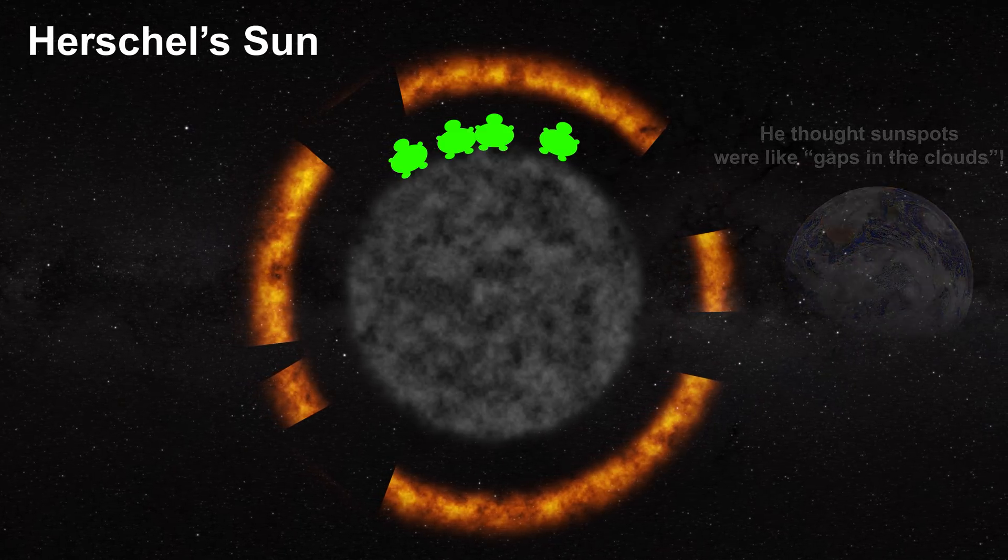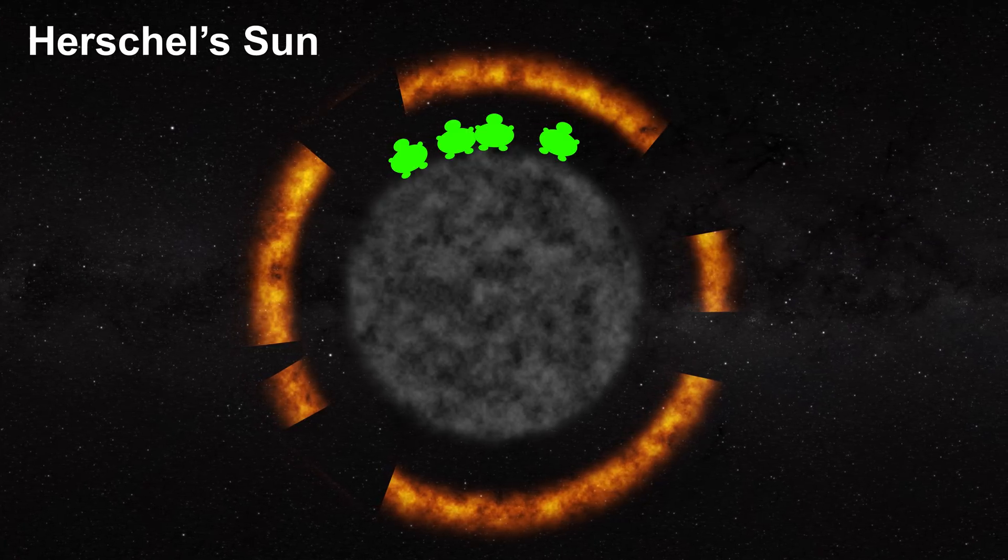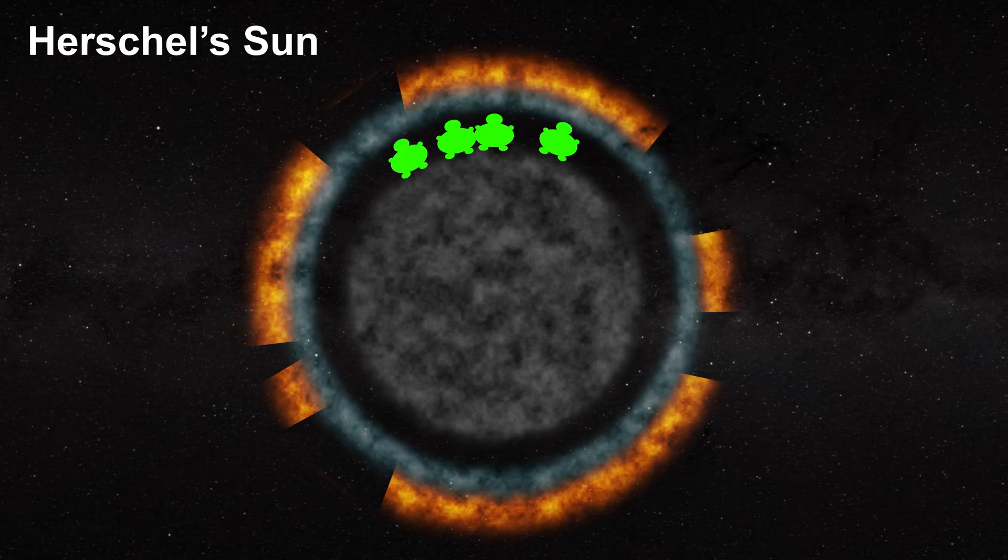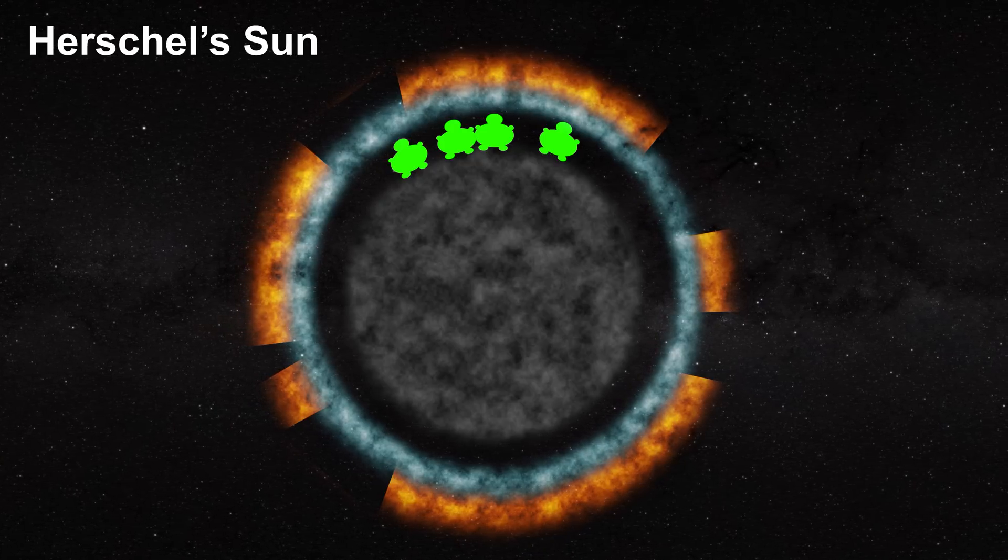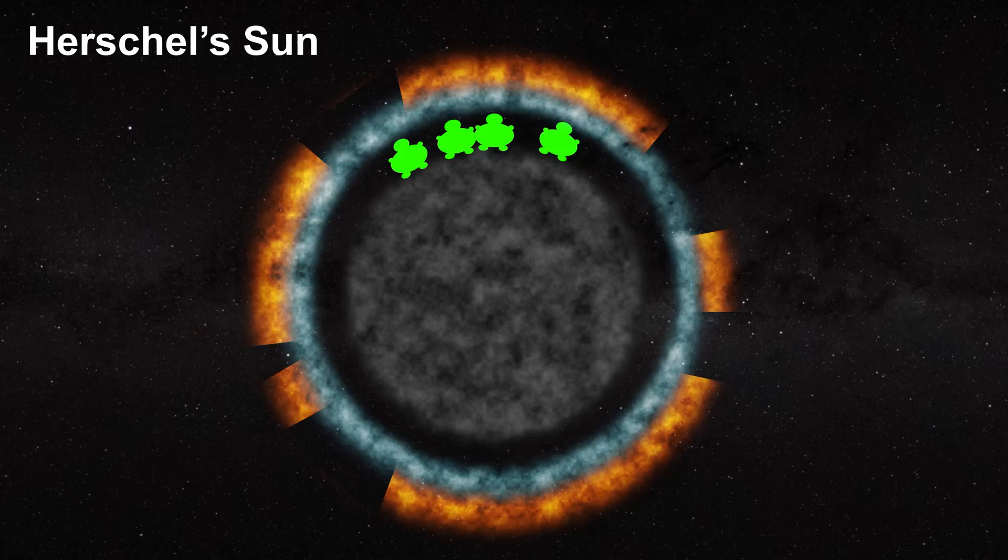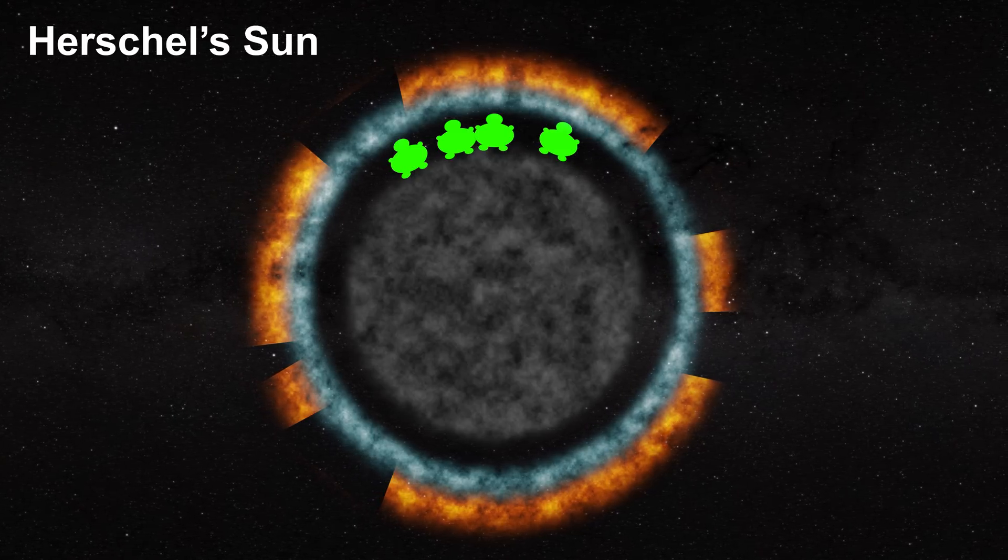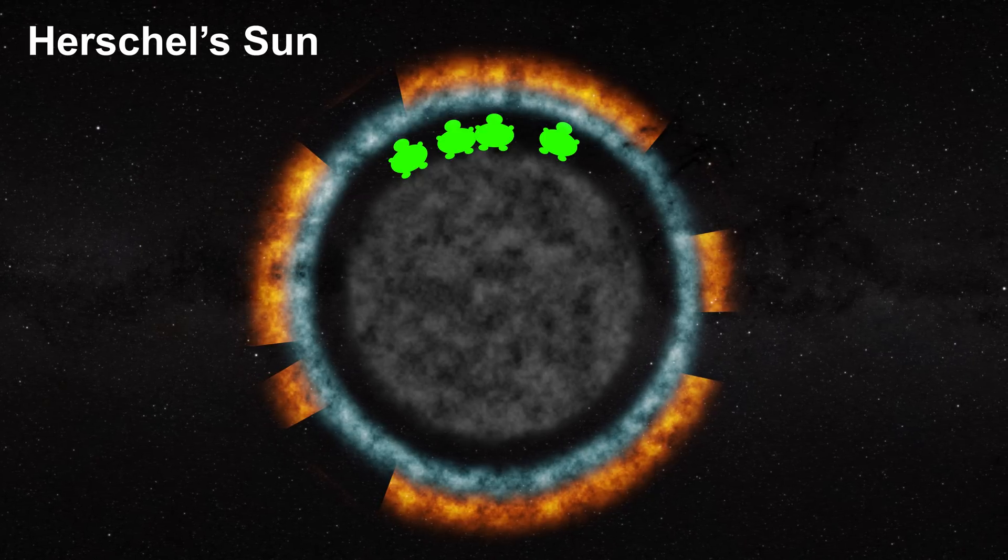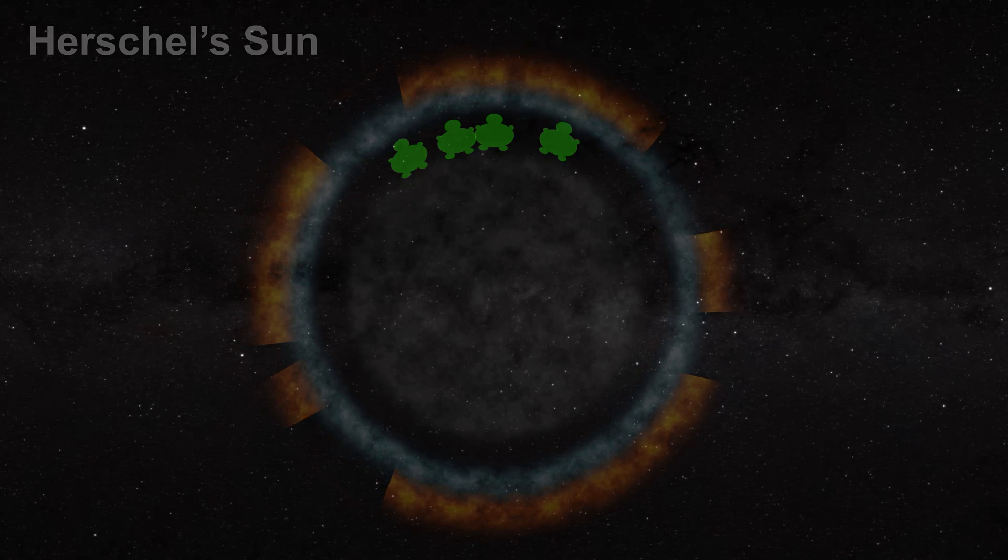However, Herschel soon recognized that the photosphere was extremely hot and could harm his solarians. To protect his aliens, he added a second layer of clouds between the photosphere and the solid surface. Placing reflective clouds above their heads, Herschel could shield his solarians from the intense heat of the photosphere. This is an example of how scientists can easily fit fantasy to facts. It would not take much more imagination to make the entire sun a gas.